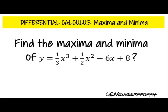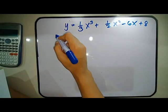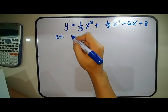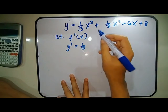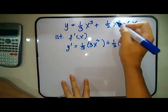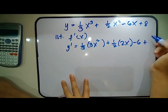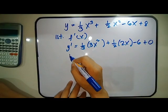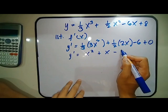Let's solve a sample problem. We are finding the maxima and minima of the function f of x equal to one-third x cubed plus one-half x squared minus 6x plus 8. The first step is to find f prime of x. So y prime equals, applying the power rule: one-third times 3x squared plus one-half times 2x minus 6, giving us y prime equals x squared plus x minus 6.